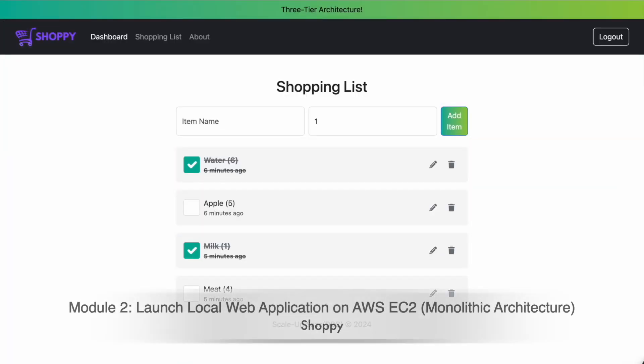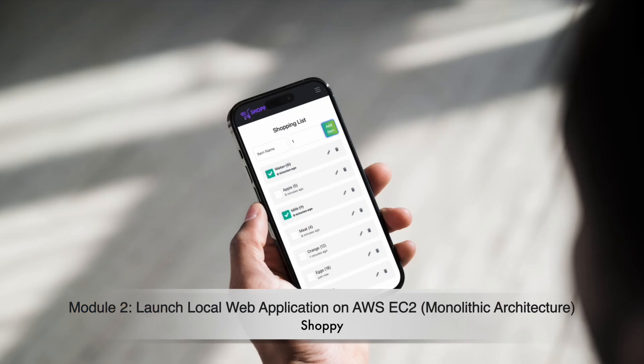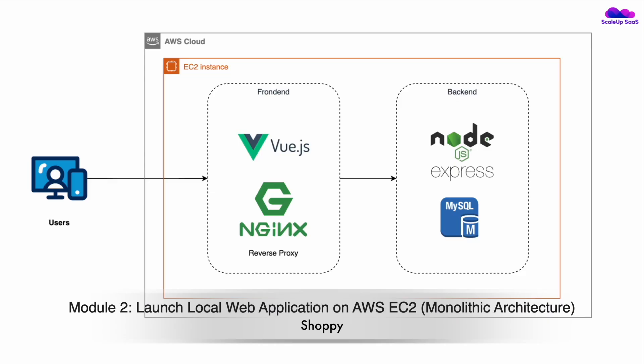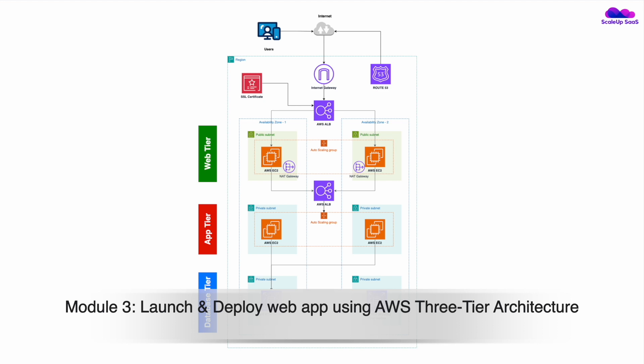In the next module you'll learn how to launch a local web application on AWS EC2. We're using Shopee, a full-stack web application we built to help you understand how to implement and deploy full-stack applications. It includes a front-end using Vue.js and Nginx, and a back-end using Node.js, Express.js, and MySQL as the database.